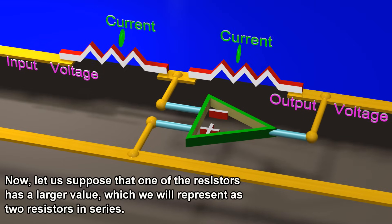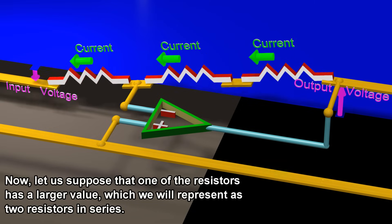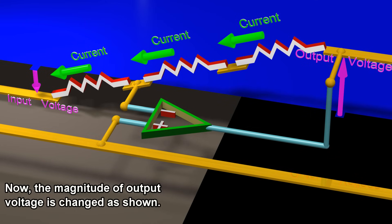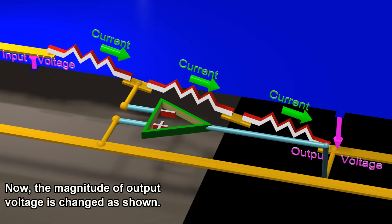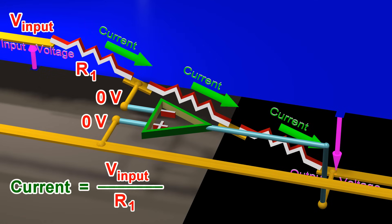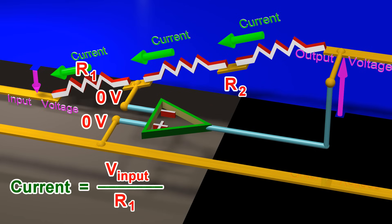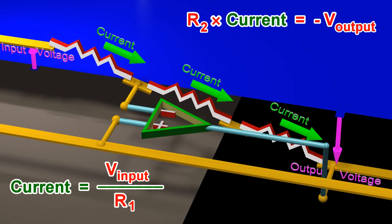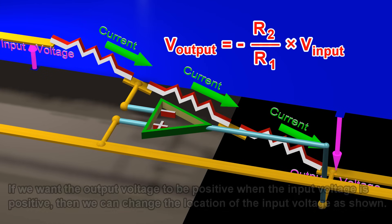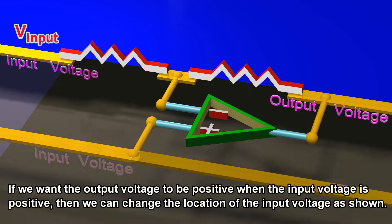The voltage drop across each resistor is the value of this current multiplied by the resistor's resistance. Now, let us suppose that one of the resistors has a larger value, which we will represent as two resistors in series. Now, the magnitude of output voltage is changed as shown. If we want the output voltage to be positive when the input voltage is positive, then we can change the location of the input voltage as shown.